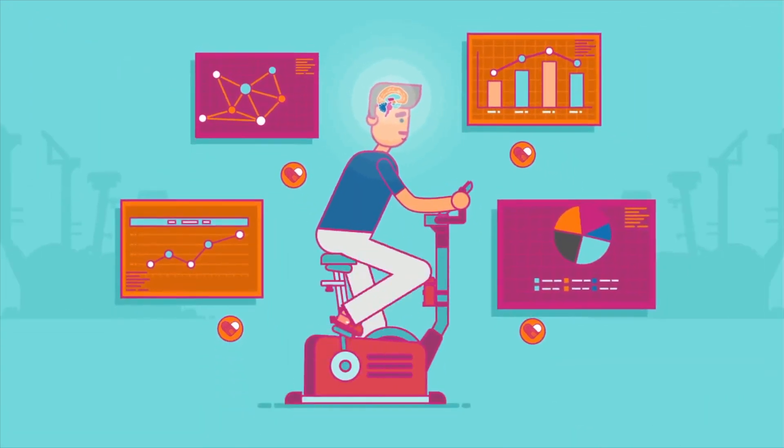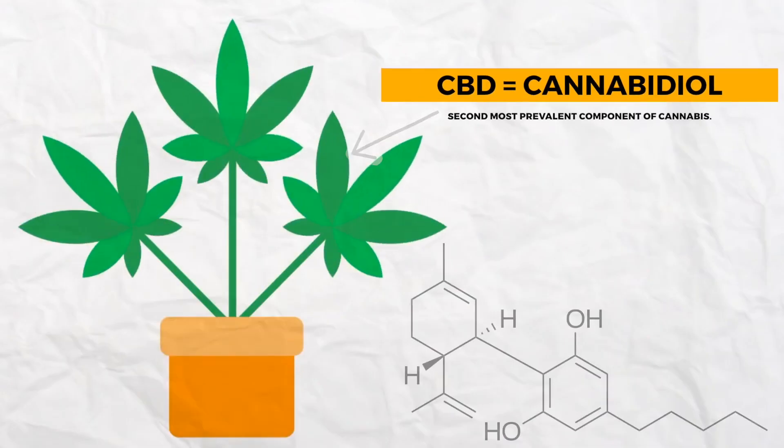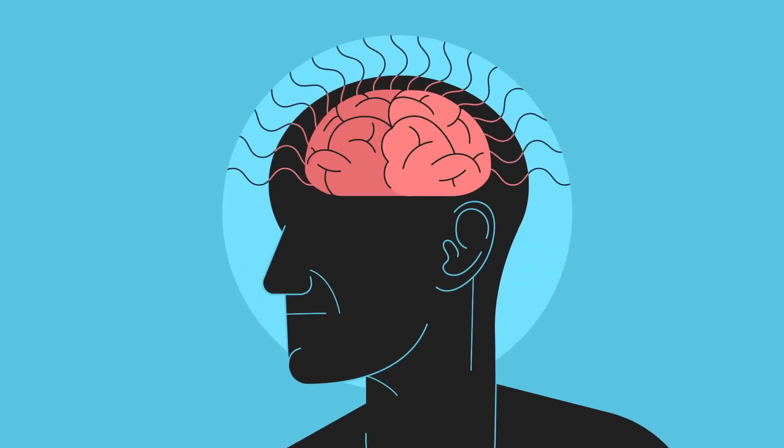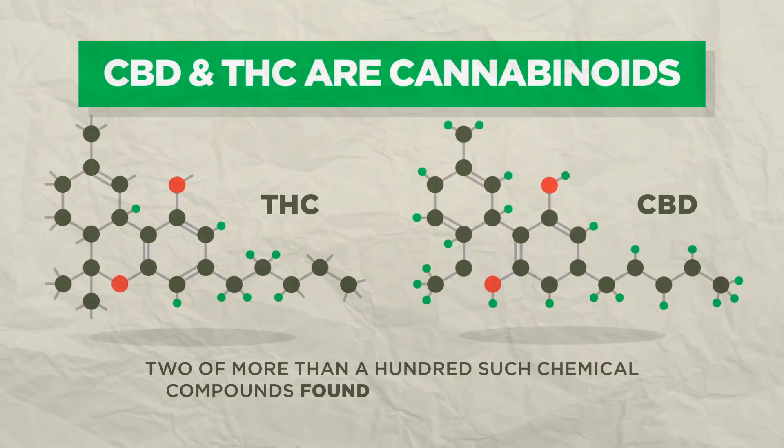So what is CBD? CBD is a phytocannabinoid derived from industrial hemp and is known for supporting the mind and body in many ways. CBD comes from the flowers of the industrial hemp plant and is non-intoxicating.